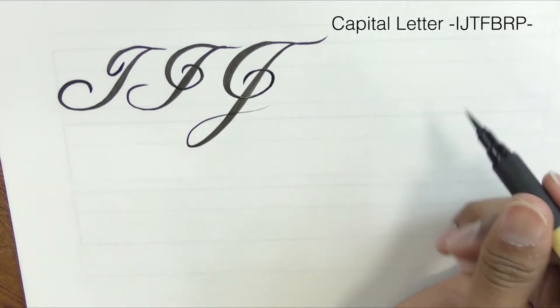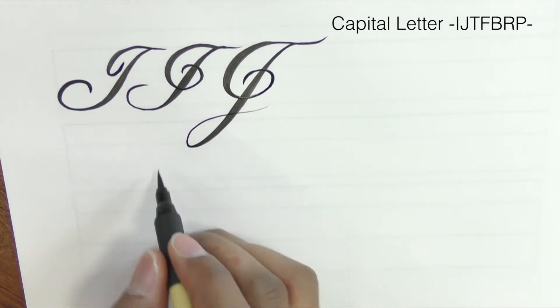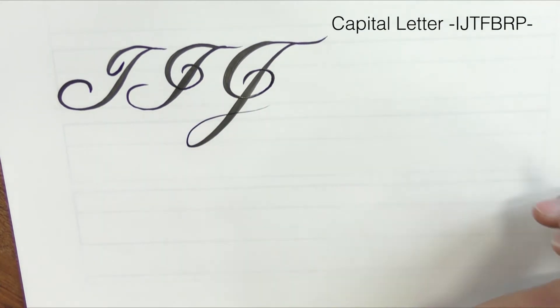The ball of the J is always bigger than the ball of the I. As well, it has a longer descending tail.